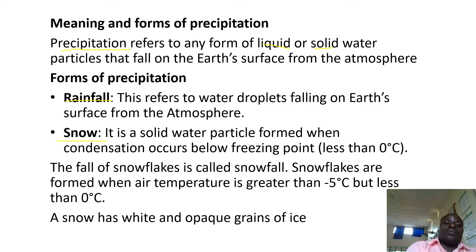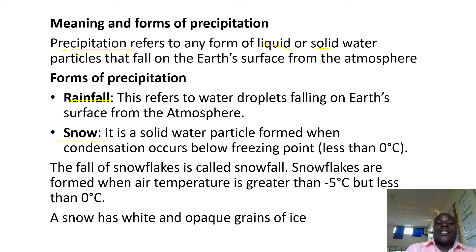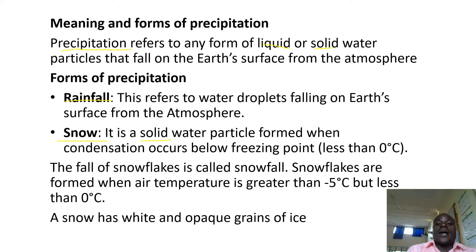Snow is a solid water particle formed when condensation occurs below the freezing point. Snow is in a solid state, not in a liquid state like rain. It is formed when condensation occurs below the freezing point — below zero degrees Celsius.